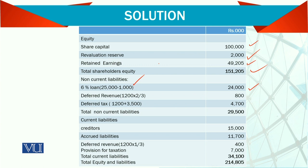Deferred revenue — this deferred revenue is basically advance service charges. Then deferred tax: we don't know exactly when it is going to be adjusted, so that's why it is in the long-term section. That gives us total non-current liabilities. Then we have current liabilities: creditors, accrued liabilities, deferred revenue, and provision for tax, giving total current liabilities. We add up the three figures — equity, non-current liabilities, and current liabilities — to get our total liabilities and equity.